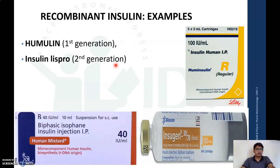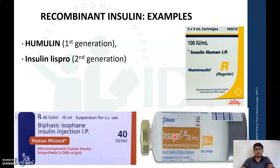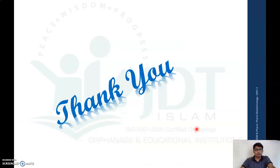Some examples of recombinant insulin include Humulin, which is a recombinant DNA origin human insulin IP manufactured by Lilly. Another example is human mixture, a monocomponent human biosynthetic insulin of recombinant DNA origin. Another example is Insugen. That is all about the production of insulin by recombinant DNA technology. Hope it is clear. Thank you for watching this video.